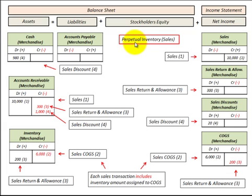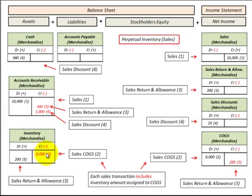Now let's look at the sale side of a perpetual inventory system. We make a sale on account for $10,000 — debit accounts receivable for $10,000 and the corresponding credit entry goes to sales for $10,000. Sales is a revenue account so we increased revenue. When we make this sale we also have to account for the inventory at cost basis — let's say $6,000 — so we debit cost of goods sold for $6,000 and credit inventory for $6,000.